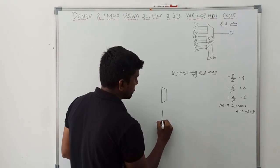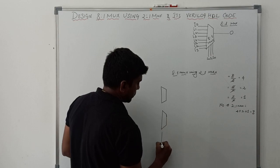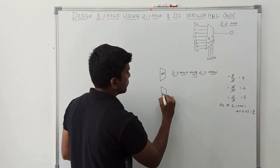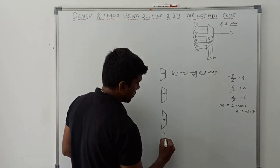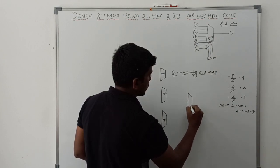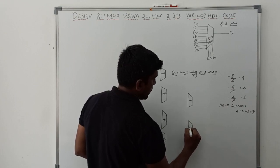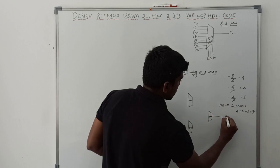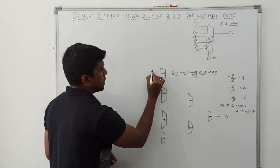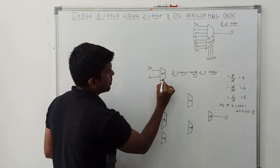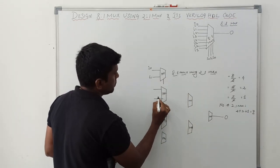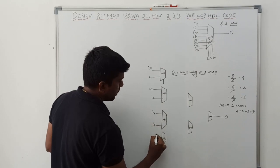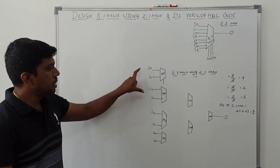So I draw here 7 multiplexers: M1, M2, M3, M4, M5, M6, and M7. M7 gives the output O. Each 2-to-1 multiplexer has 2 inputs and a selection line. The inputs are named I0 through I7, so totally 8 number of inputs starting from I0 to I7.